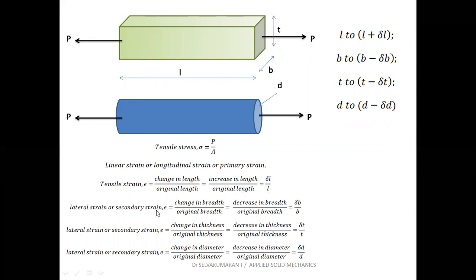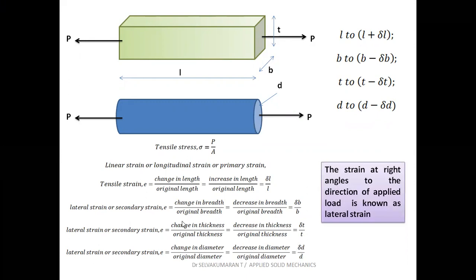Lateral strain, or secondary strain, is represented by change in breadth by original breadth. In this case, both B and T are decreasing, so lateral strains are delta B by B and delta T by T. For the circular cylinder, lateral strain is change in diameter by original diameter, which is delta D by D. Lateral strain is the strain occurring at right angles — that is, at 90 degrees — to the direction of the applied load.